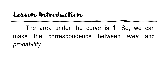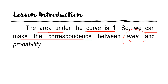For the lesson introduction, the area under the curve is equal to 1, so we can make the correspondence between your area and your probability. When dealing with your probability distribution, the total or sum of your probabilities under that table must be equal to 1. If not equal to 1, then you cannot use your normal curve to present those probabilities.